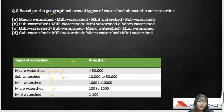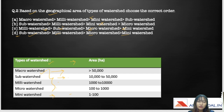Let's evaluate the options. Option A — macro, milli, mini, sub — is wrong. Option B — sub, milli, mini, micro — is also wrong. Option C — milli, sub, micro, mini — is wrong. The correct answer is option D: sub watershed, milli watershed, micro watershed, and mini watershed. This is the correct decreasing order of watershed types.